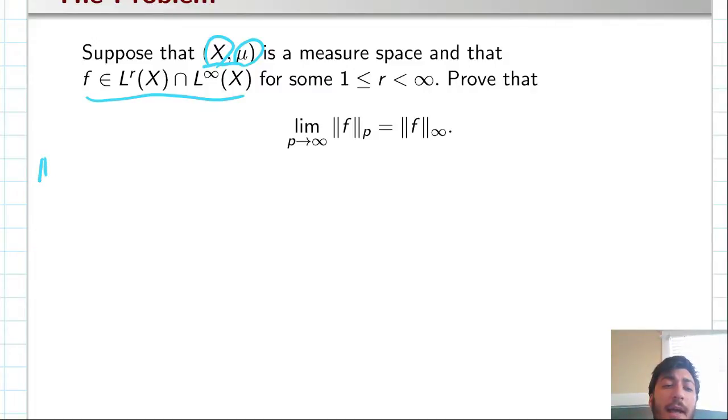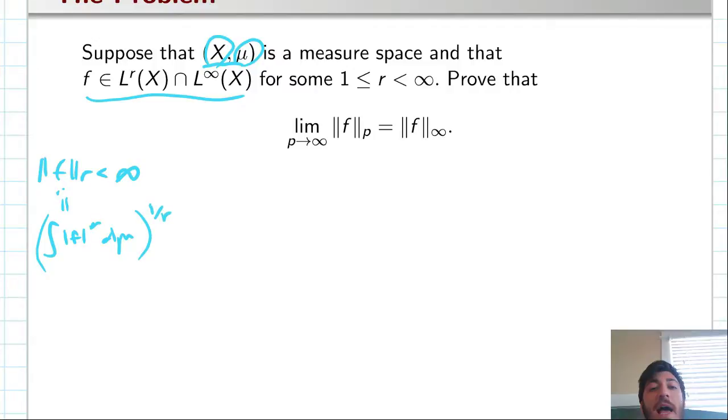So just to remind you, L^r function means that the r norm of f is finite. Or, just to remind you even further, the r norm, we'll write it like this. It's just the absolute value of f raised to the rth power, d mu, and then we take the fractional power 1 over r of that.